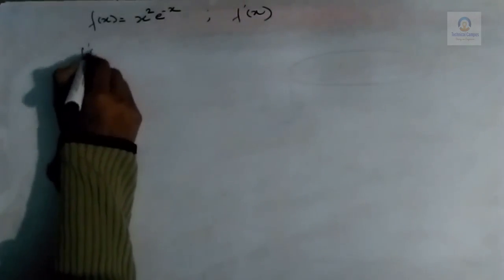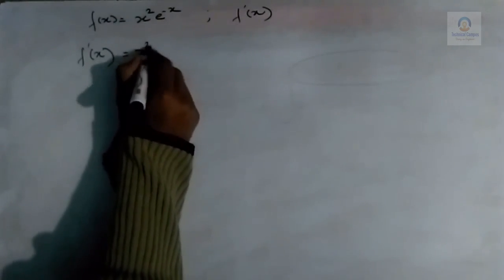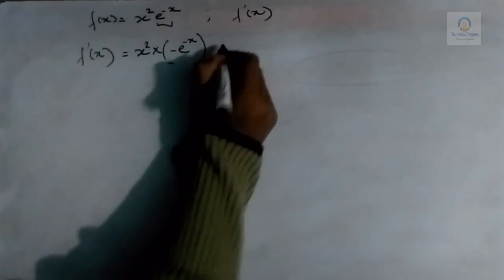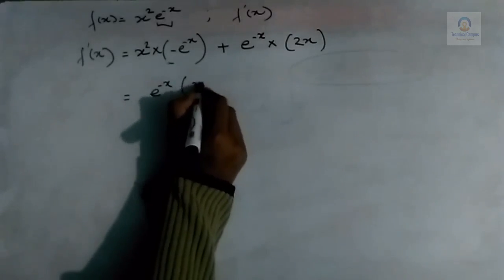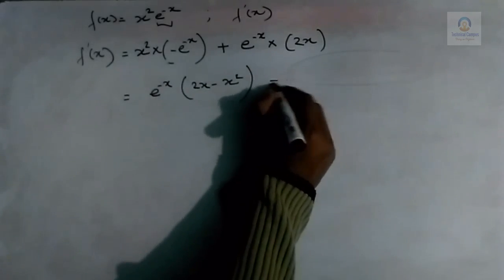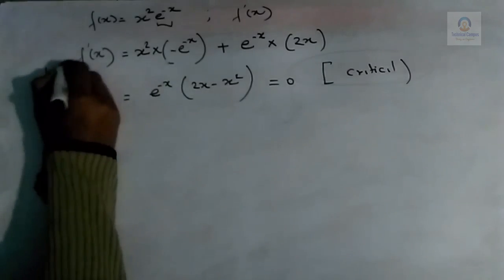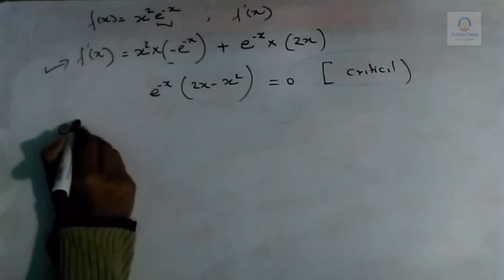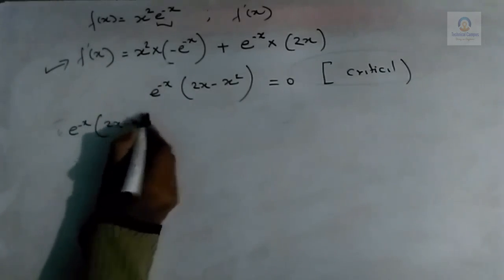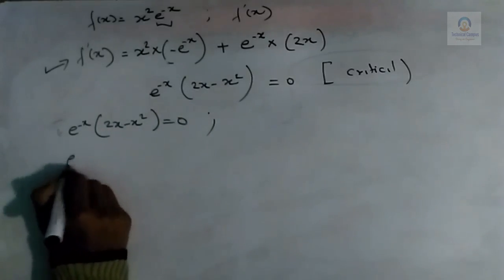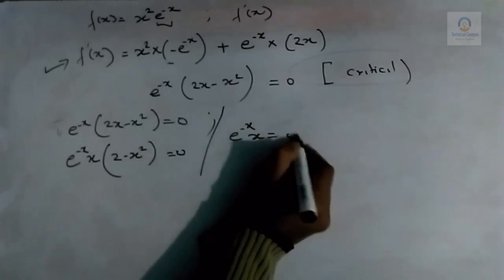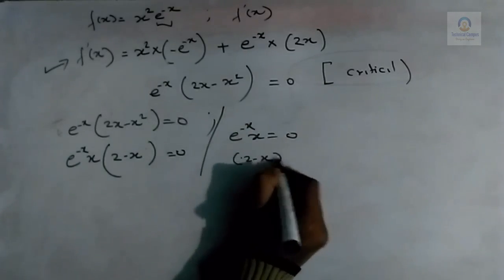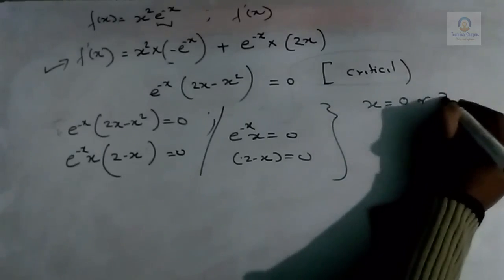Applying the product rule: f'(x) = x²·(-e^(-x)) + e^(-x)·2x = e^(-x)(2x - x²). Equating f'(x) to zero: e^(-x)·x(2 - x) = 0. This gives x = 0 or x = 2 as the critical points.